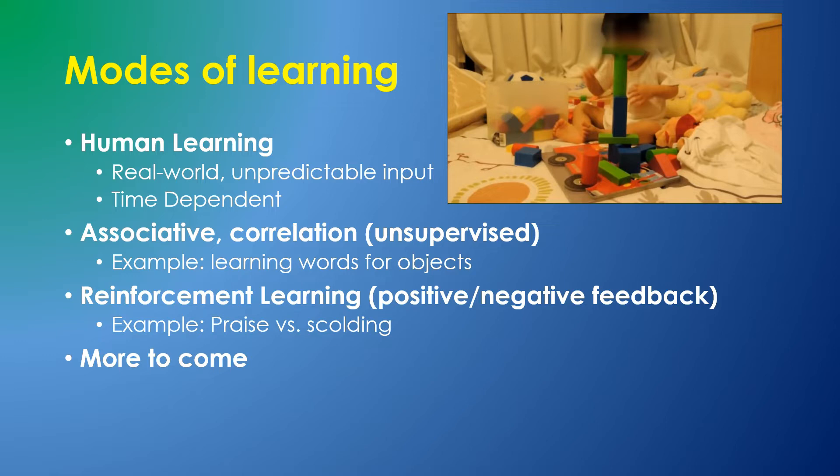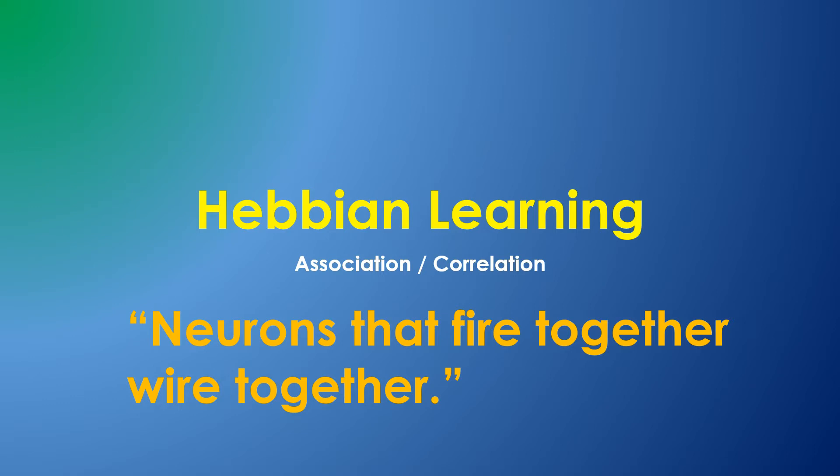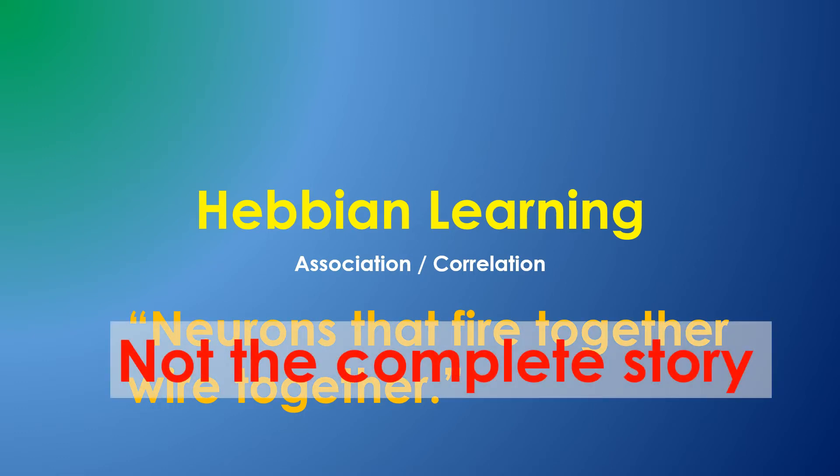This first algorithm is analogous to Hebbian learning. This is the best understood biological learning mechanism which occurs on a cellular level. It is often loosely described with the phrase 'neurons which fire together wire together.' There's a lot more to Hebbian learning than that, and I'll describe just a few details.